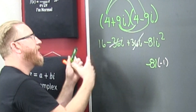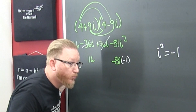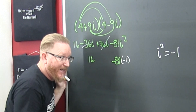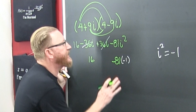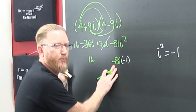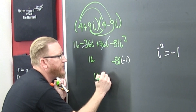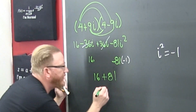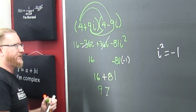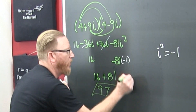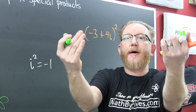Everything's real now — everything's real. That's going to be important later when we're trying to rationalize complex denominators. But for now, that's 16 plus 81, which is 97.